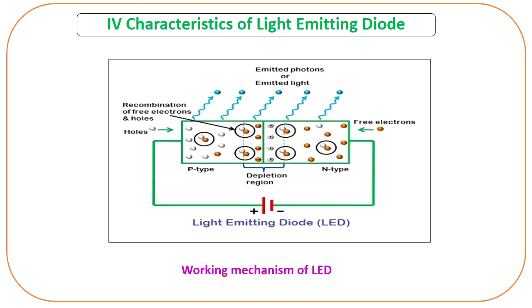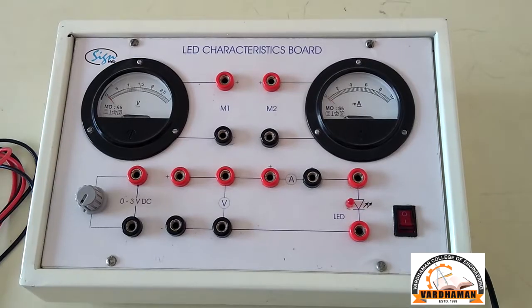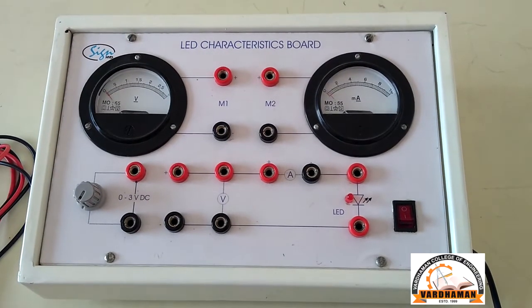In the case of LED, this energy dissipation is in the form of light. Here we use materials like gallium arsenide or gallium phosphide, and the band gap of these materials is 1.4 electron volt and 2.3 electron volt respectively. Now we will see the circuit diagram.